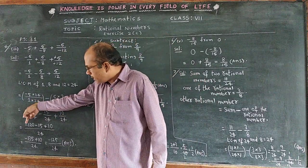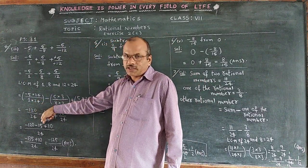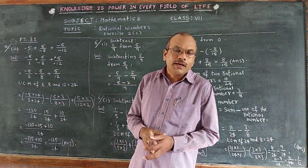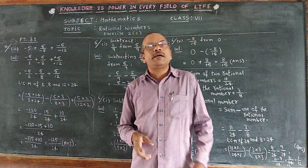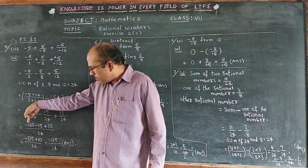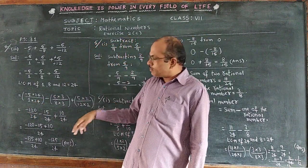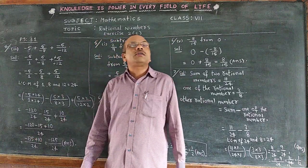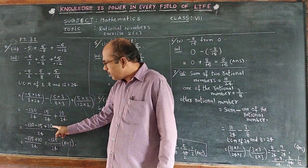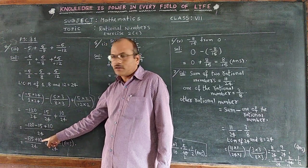Afterwards, minus 120 and minus 15 — these two are with minus symbols. A number with a minus symbol is like a debt. 120 is debt and 15 is also debt. Their total debt will be 135, so we get minus 135, and then plus 10.